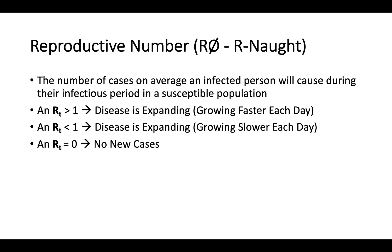I'm going to talk about the reproductive number now. Remember, it's the number of cases on average an infected person will cause during their infectious period in a susceptible population. A reproductive number greater than 1 means the disease is expanding — growing faster and faster each day. A reproductive number less than 1 also means the disease is expanding, but it's growing slower and slower every day. A reproductive number of 0 means there are no new cases.